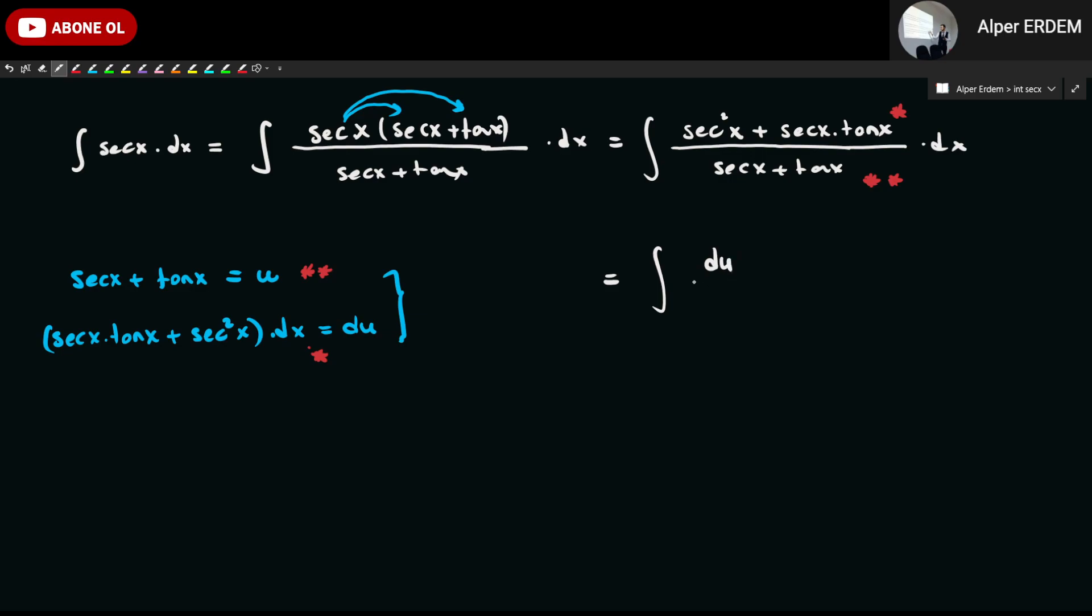Our integrand becomes du over u. We know the antiderivative of one over u equals ln, which is natural logarithm, absolute value of u plus c, where c is an arbitrary constant.